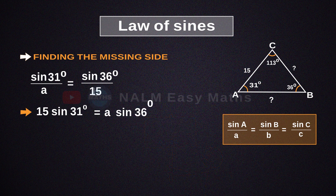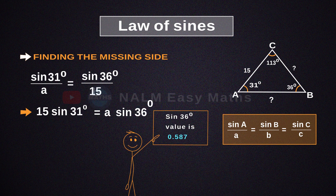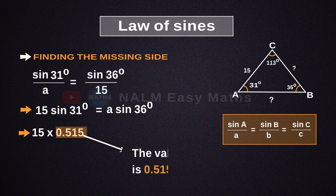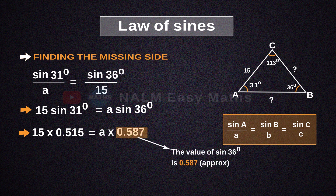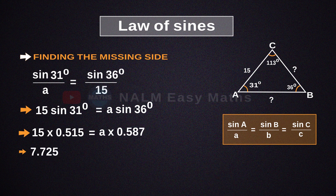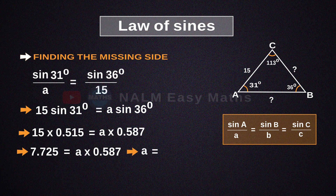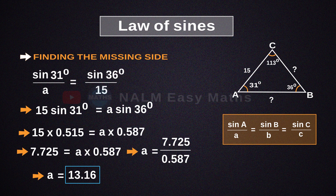We know that sine 31 degrees is approximately 0.515, and sine 36 degrees is approximately 0.587. So 15 times 0.515 equals A times 0.587, giving us 7.725 equals A times 0.587. Since we want A by itself, we divide both sides, so A equals 7.725 divided by 0.587, which gives A equals 13.16.